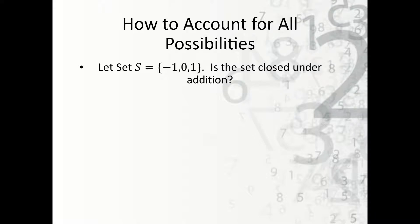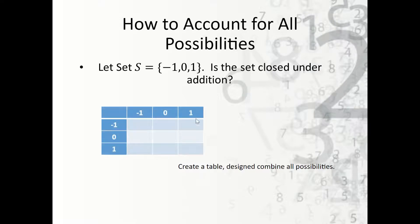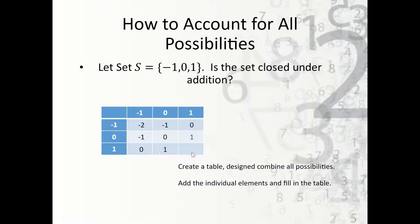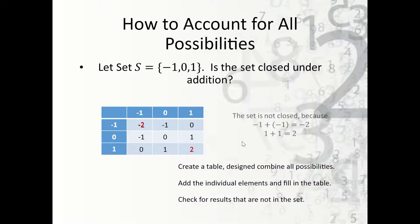To account for all possibilities, we create a table combining all combinations. We fill in: −1+−1=−2, −1+0=−1, −1+1=0, 0+−1=−1, 0+0=0, 0+1=1, 1+−1=0, 1+0=1, 1+1=2. We can see two results not in the set: −2 and +2. Therefore the set is not closed. Whenever we say a set is not closed, we need to say why — here it's because of 1+1 and −1+−1.